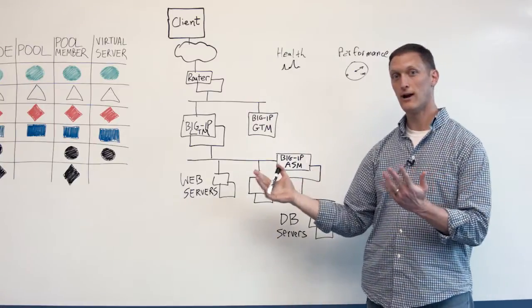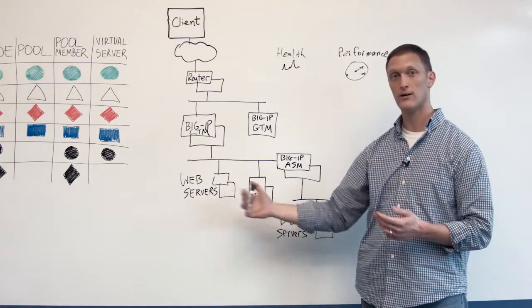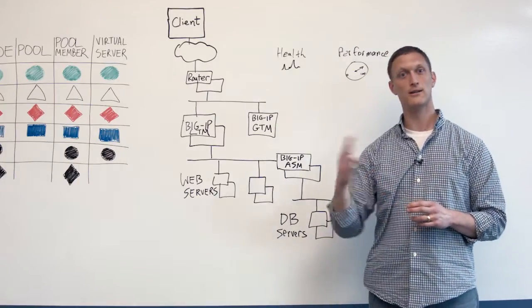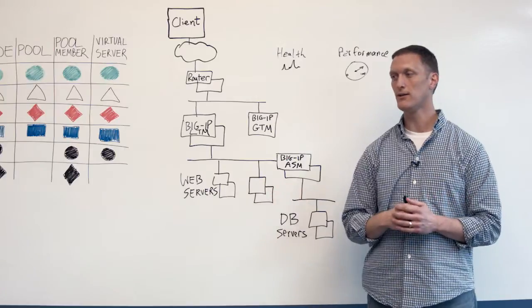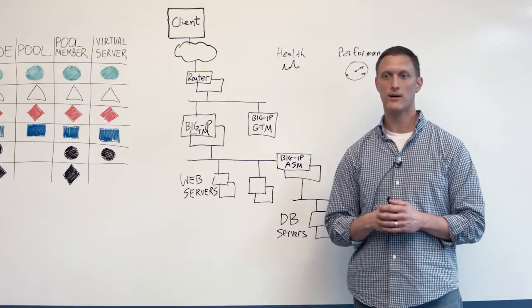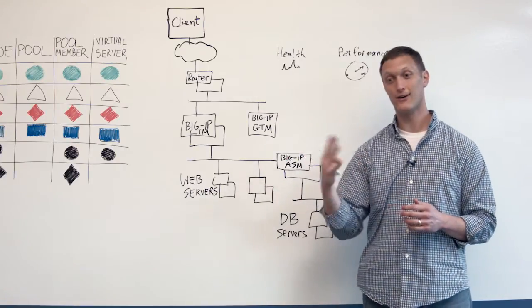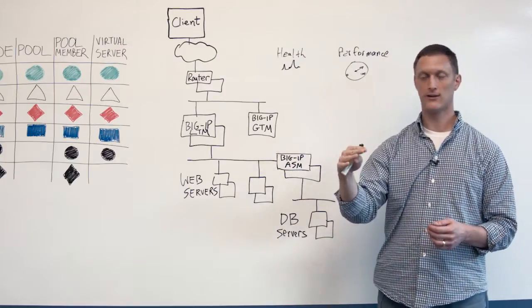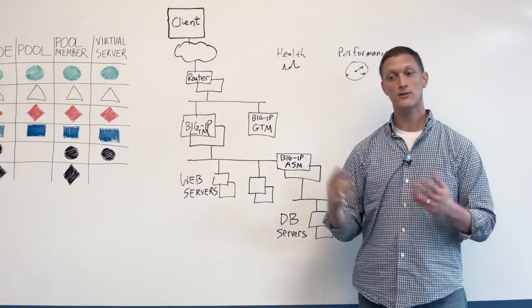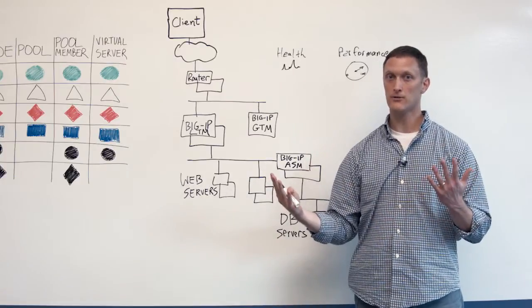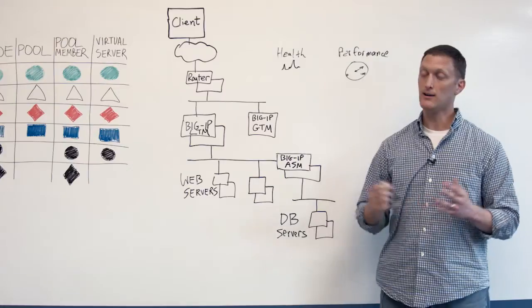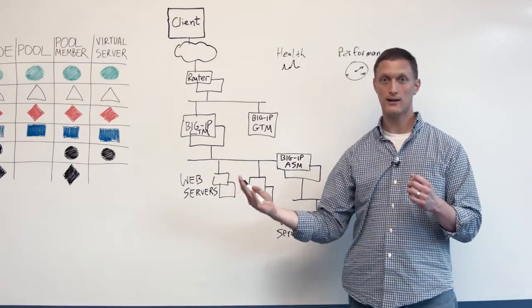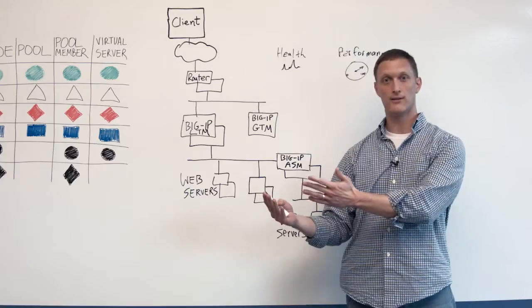There's a health monitor and there's a performance monitor. The health monitor tells you whether your application or your server is up or down whereas the performance monitor tells you how quickly it's responding. You could compare this to say a car, whereas the health monitor would tell you is the car on or off, the performance monitor would tell you how fast is the car going to be able to drive down the road.